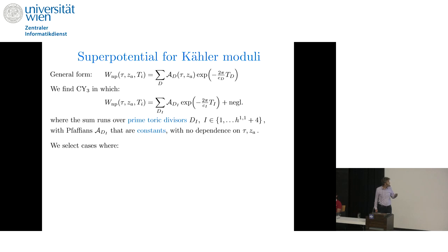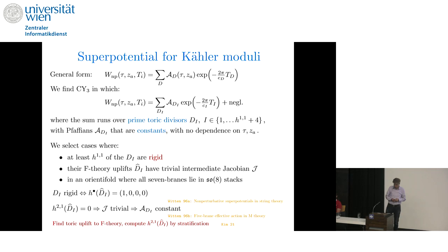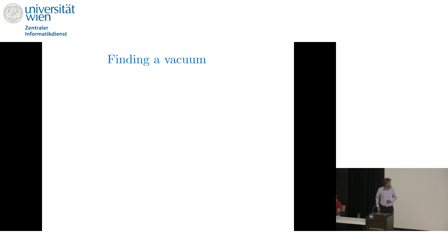So to do this, we select cases where at least H11 minus 1 of the prime toric divisors are rigid and their F-theory uplifts have trivial intermediate Jacobian in an orientifold where all the seven branes lie in SO(8) stacks. So the rigidity condition is just the classic way of counting fermion zero modes for a superpotential contribution. The condition of trivial intermediate Jacobian ensures that the Pfaffian is a section of a trivial bundle over the moduli space, i.e. it's a number. Now, actually computing this took a bit of work. We made use of some technology developed by Manki Kim to compute these Hodge numbers by stratification in the F-theory uplift. But suffice it to say, the computation was carried out. The details are given in the paper.